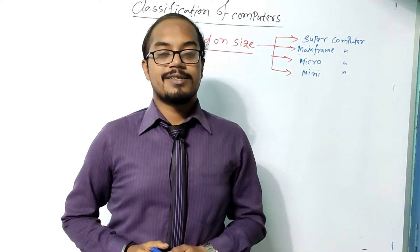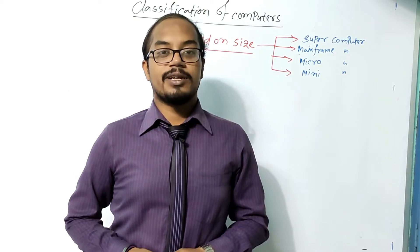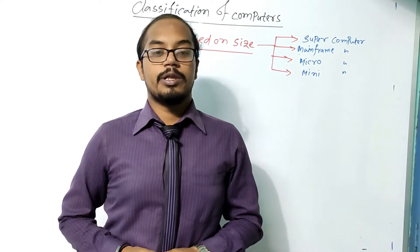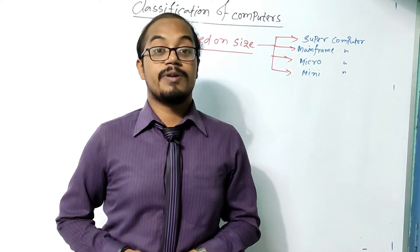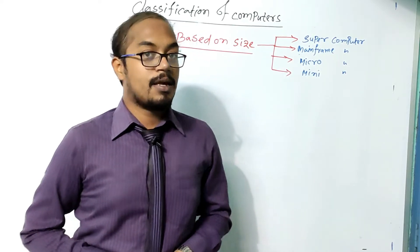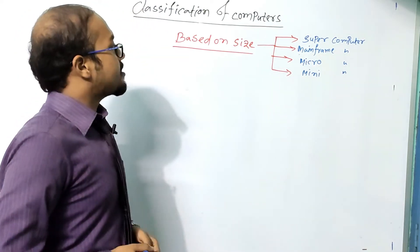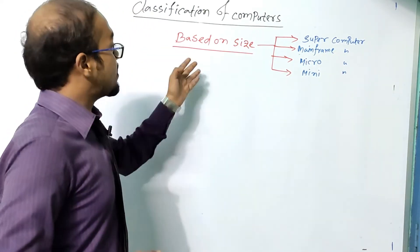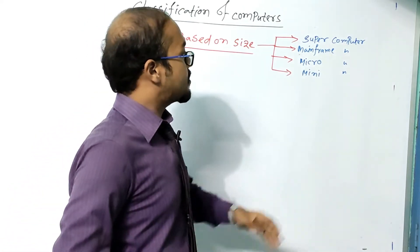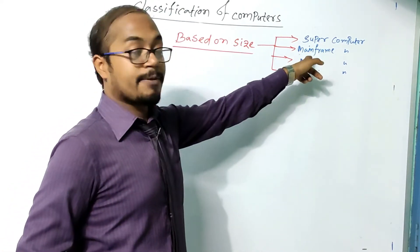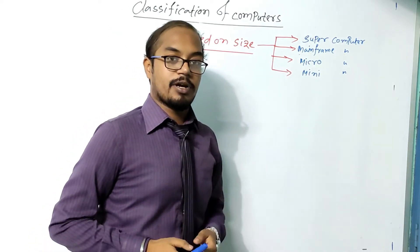Welcome to our channel Science Hub, where we make science and computer related videos. Today we will learn about the classification of computers based on their size. Computers are classified into four types: supercomputer, mainframe computer, microcomputer, and minicomputer.